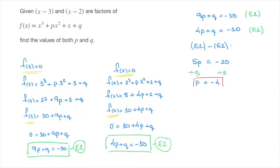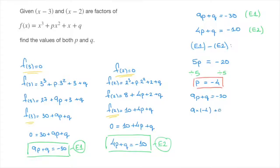We now have the value of coefficient p. To find q, we can use either equation — E1 or E2 — and replace p by negative 4 and solve for q. Using E1, which was 9p plus q equals negative 30: replacing p by negative 4 gives 9 times negative 4 plus q equals negative 30. Now 9 times negative 4 is negative 36, so negative 36 plus q equals negative 30. Adding 36 to both sides, q equals negative 30 plus 36, which equals 6.